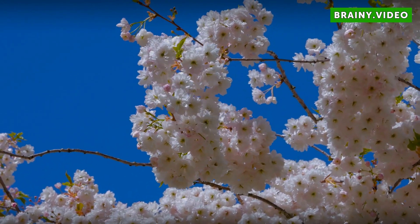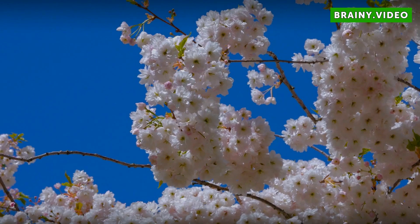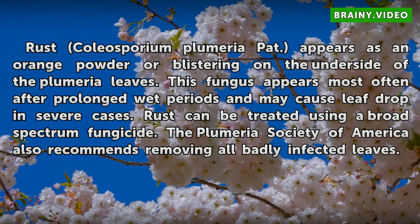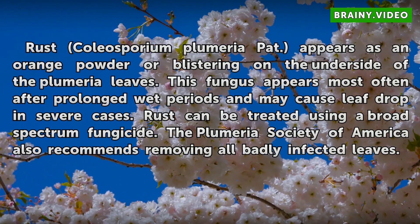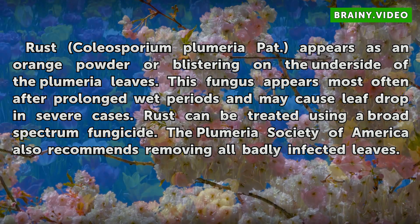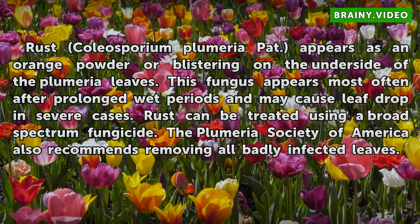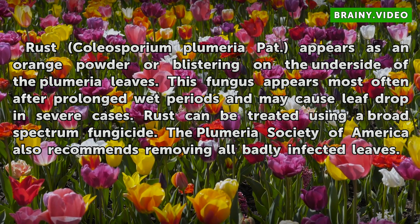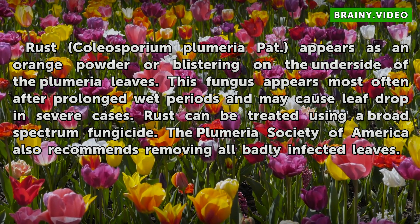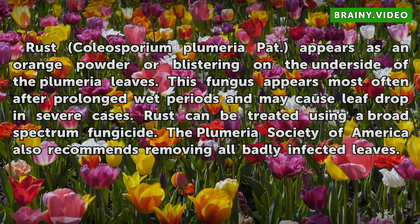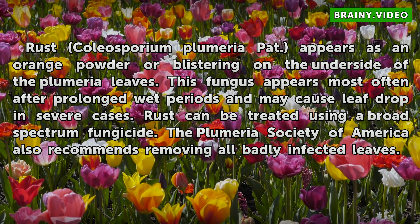Rust. Rust (Coleosporium Plumeriae) appears as an orange powder or blistering on the underside of the Plumeria leaves. This fungus appears most often after prolonged wet periods and may cause leaf drop in severe cases. Rust can be treated using a broad-spectrum fungicide. The Plumeria Society of America also recommends removing all badly infected leaves.